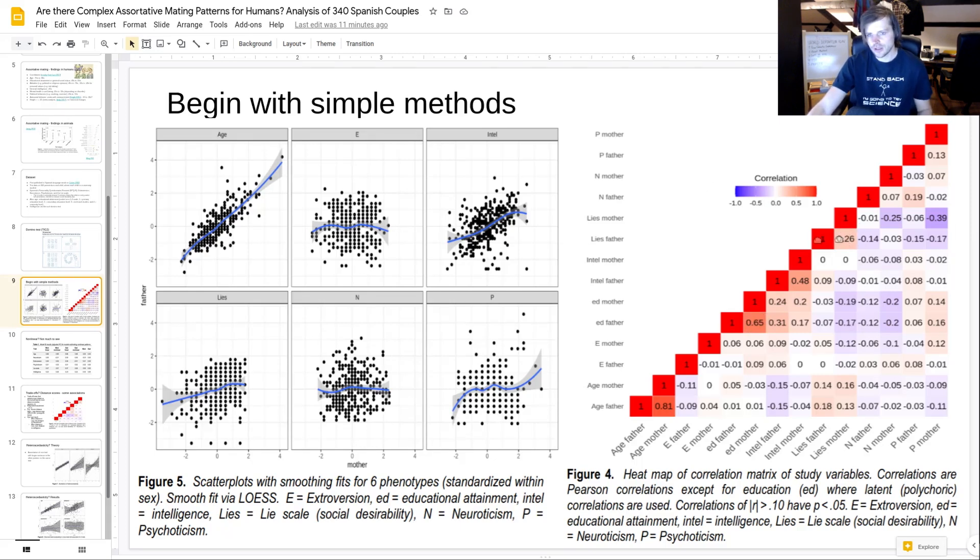You can see there's the lie scale - the tendency to do positive self-presentation, social desirability responding - it's positive. But most other things, it's basically nothing. Psychoticism is only point 13 or so. What you get is that you can see there's some cross trait relationship. Let's say the tendency of the mother to do social desirability responding is strongly related to the p-factor of the mother or the psychoticism. I guess the psychoticism people are just like, fuck it. And this is kind of measuring agreeableness in some sense.